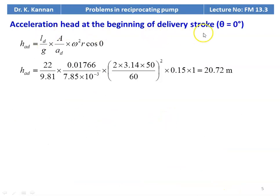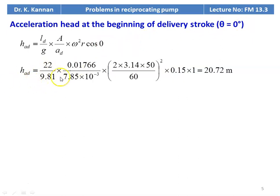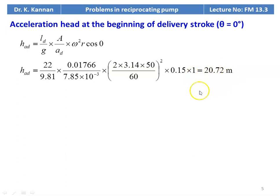Acceleration head at the beginning of the delivery stroke (θ = 0°): H_CAD = (LD/g) × (A/AD) × ω² × R × cos θ. Substituting: 22/9.81 × 0.01766/7.85×10⁻³ × ω² × 0.15 × cos 0° (= 1), where ω = 2πN/60 = 2×3.14×50/60. This gives H_CAD = 20.72 m.